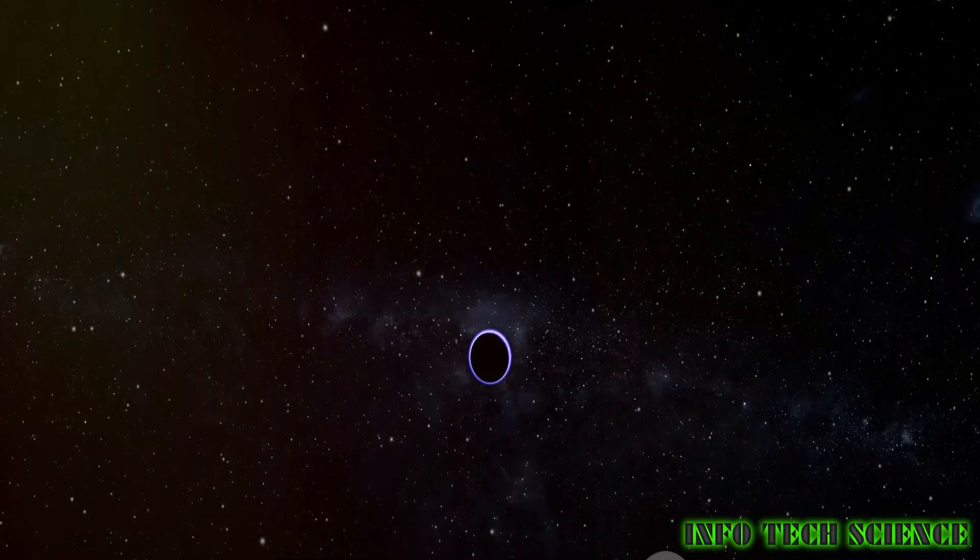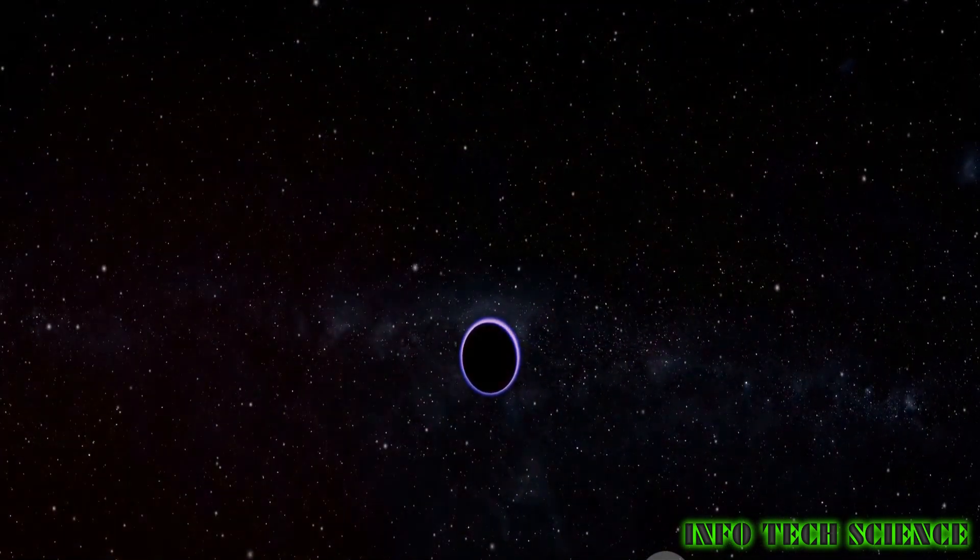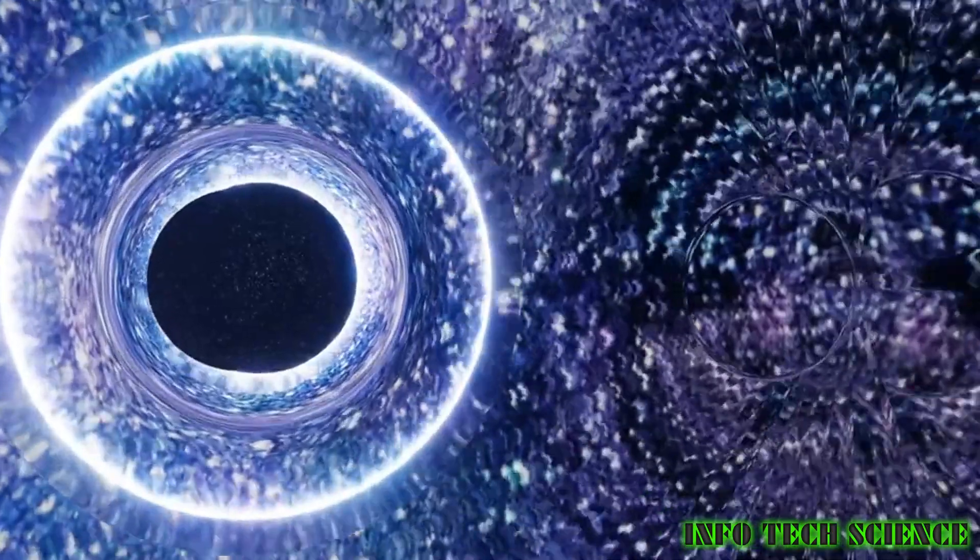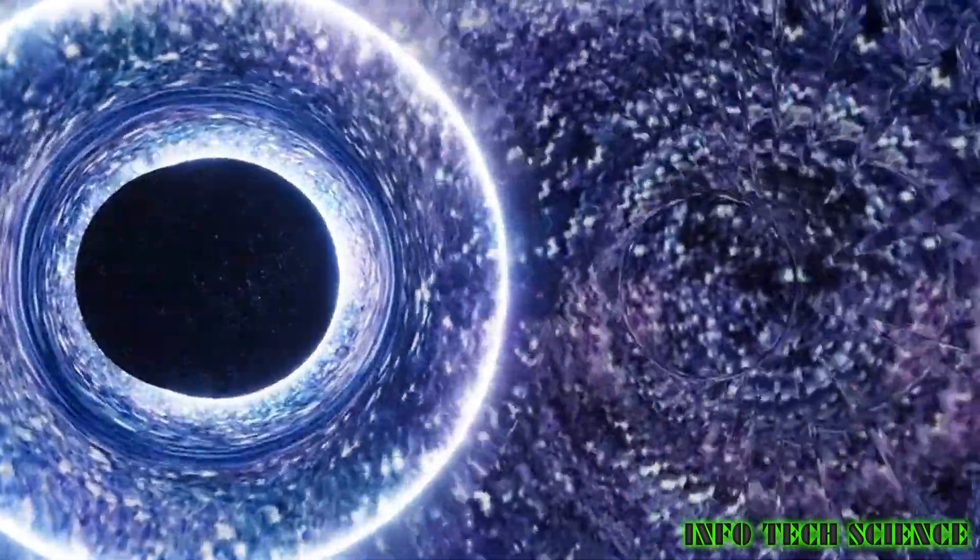If our Sun hit a black hole as massive as Mercury, we wouldn't even notice it, although it's very unlikely.